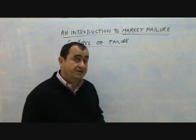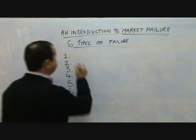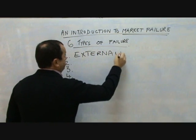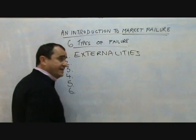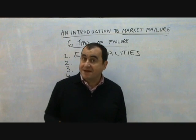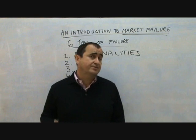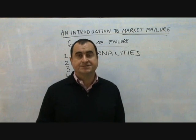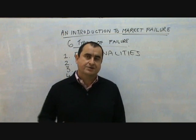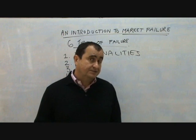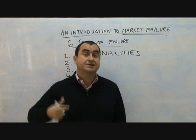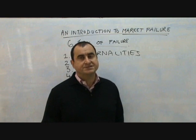One of the most significant ways that market failure occurs is the creation of externalities. Externalities are external costs and external benefits which occur during economic activity, but which are not considered by the buyers and sellers involved in that economic activity, because external costs and external benefits affect third parties — not the buyers, not the sellers, but third parties.